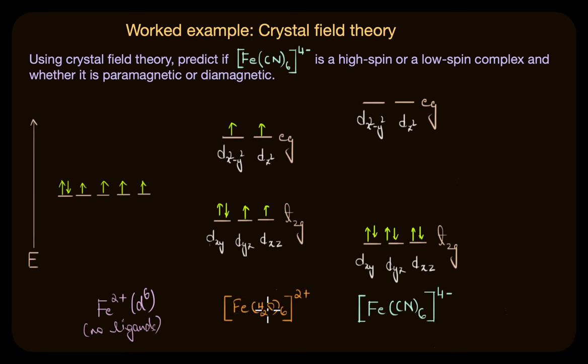To compare, this is what our final configuration looks like in [Fe(H₂O)₆]²⁺ and [Fe(CN)₆]⁴⁻. Here we have a weak field ligand and as a result we get a high spin paramagnetic complex and here we have a strong field ligand and as a result we get a low spin diamagnetic complex. Thank you.